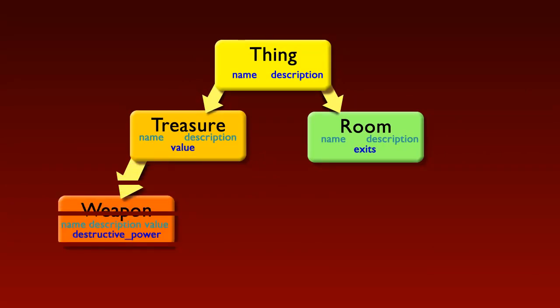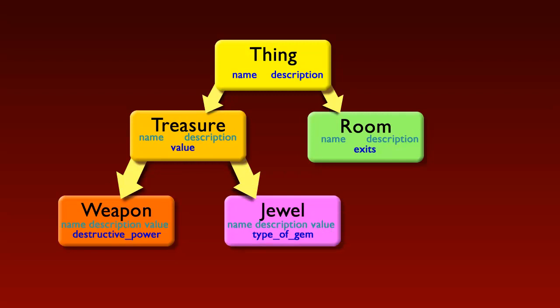And I can carry on creating further levels of sub-classes. Here Weapon descends from Treasure. It inherits the name, description, and value and adds on destructive power. Meanwhile the Jewel class descends from Treasure too. So it has a name, description, and value and it adds one more attribute, type of Gem.